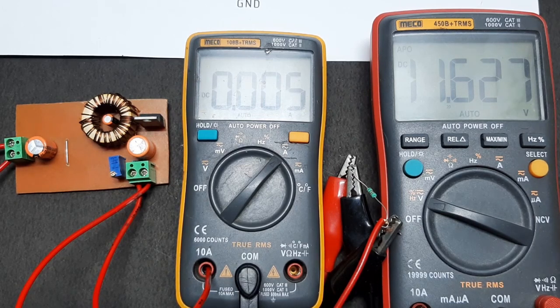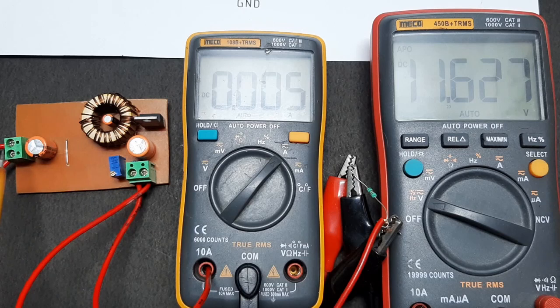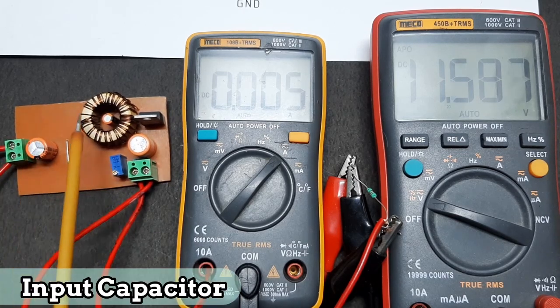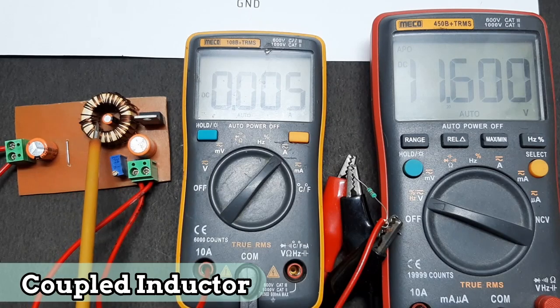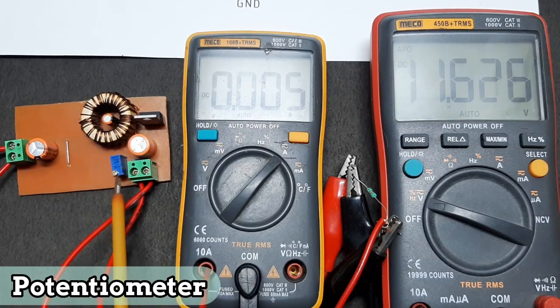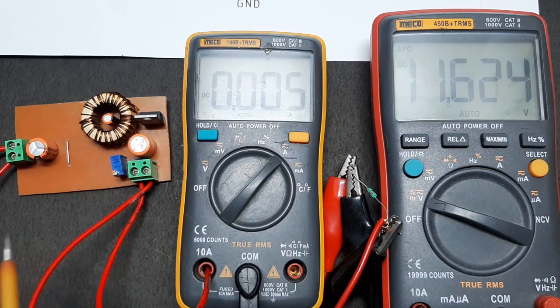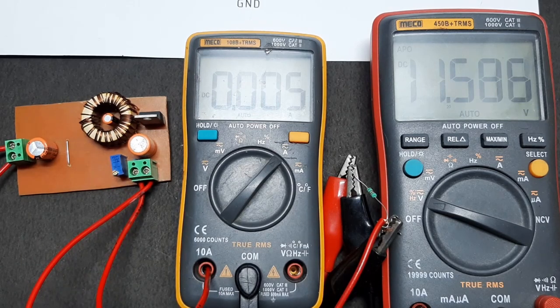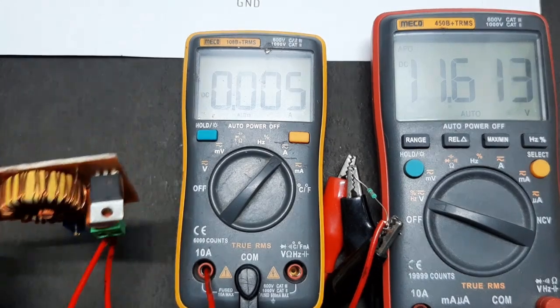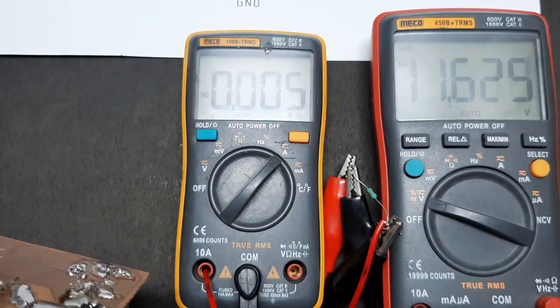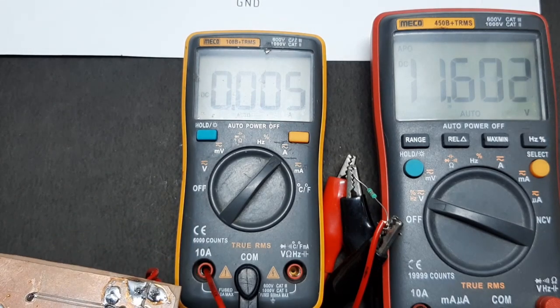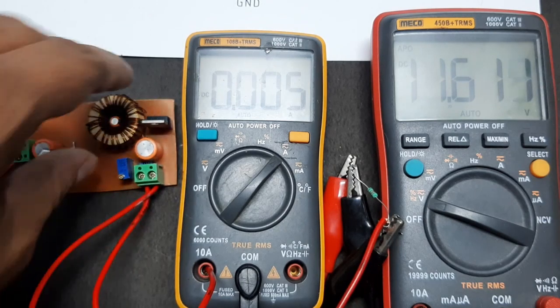As you can see, I have the hardware right here. This is our input and input capacitor, and this is the main coupled inductor, which is why it's called a SEPIC converter. This is our potentiometer through which we can adjust the output voltage. Let me turn this around and you can see the XL6009 IC.